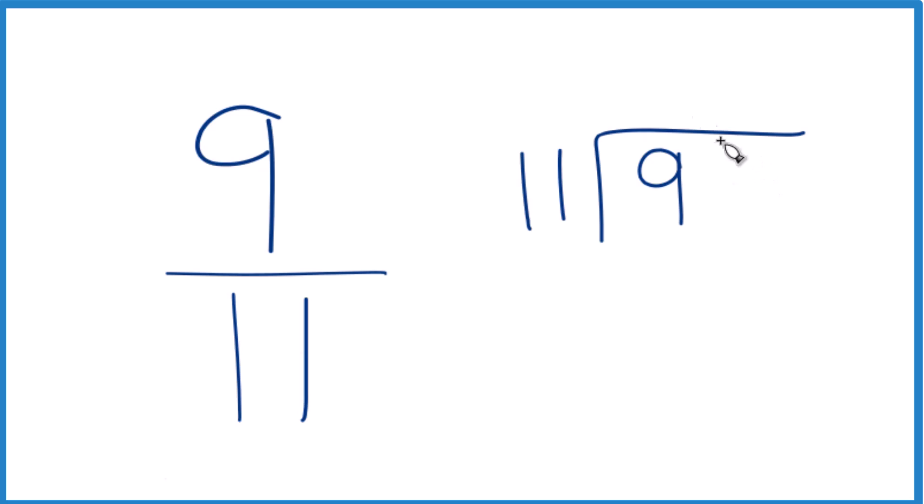11 doesn't go into 9 but if we put a 0 and a decimal point we could call it 90. Now 8 times 11 that's 88 so that's close. Subtract and we get 2.